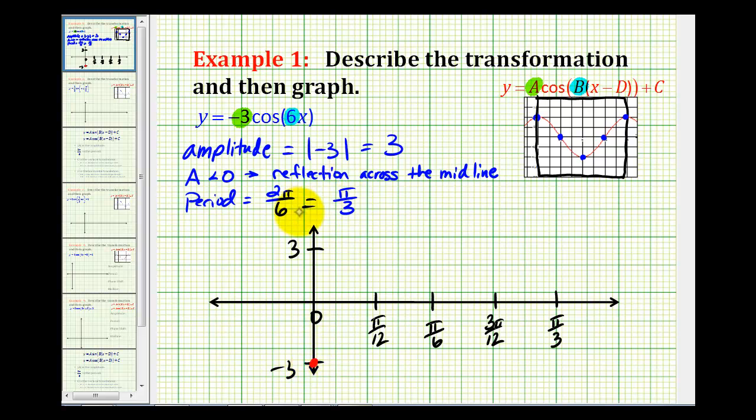Again, because a was negative, we're reflecting it across the x-axis. The next fourth will be at the midline, the next fourth, instead of a minimum, will be at a maximum because a is negative three.